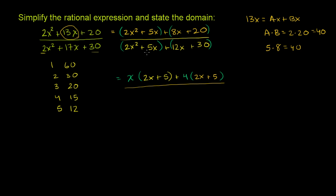Doing the same for the denominator: from the first group, factor out x to get x times (2x + 5). From the second group, factor out 6 — since 12x ÷ 6 = 2x and 30 ÷ 6 = 5 — giving 6 times (2x + 5).